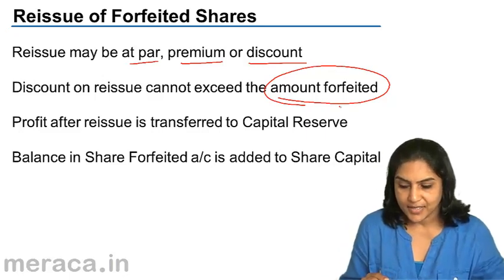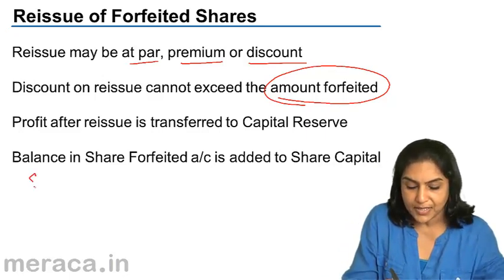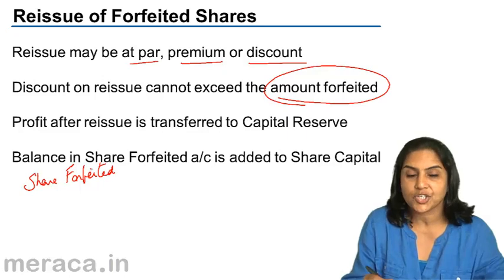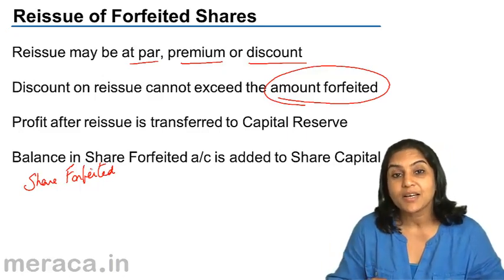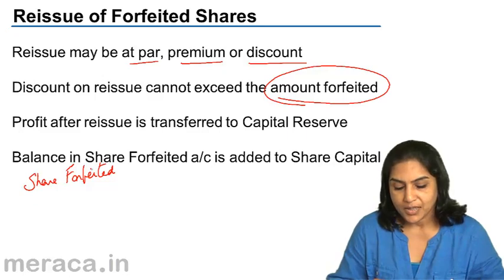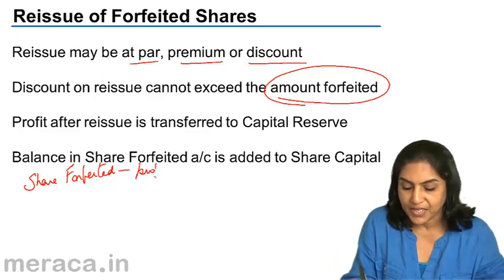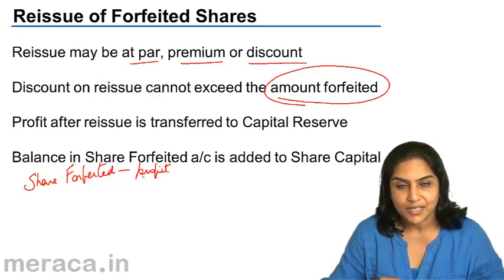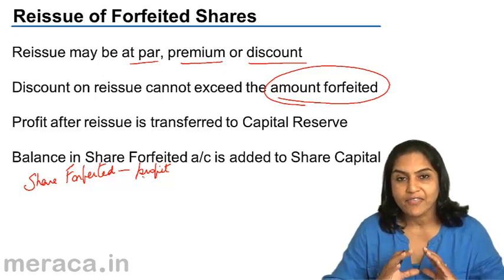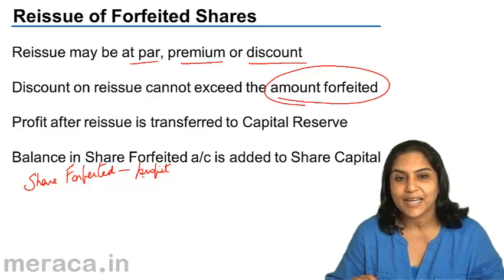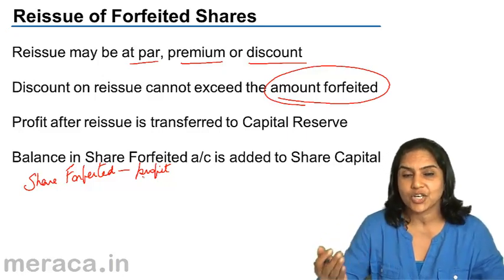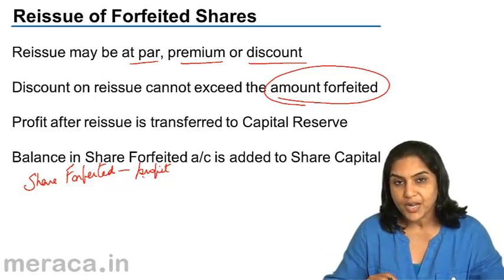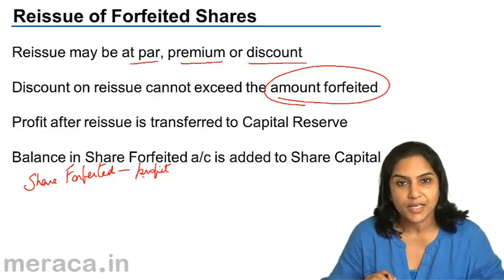The amount which lies in the shares forfeited account is the amount which has been received. This amount is a capital profit — because the shares have been cancelled, there is no share, but the amount has been received. This profit is retained in the shares forfeited account until the share is reissued.